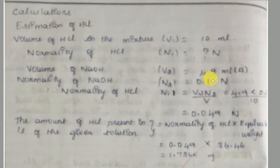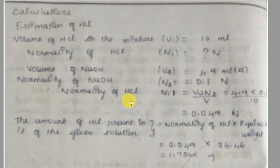The burette reading for HCl neutralization is V2 = 4.9 ml. The normality of sodium hydroxide is N2 = 0.1 N. Therefore, normality of hydrochloric acid N1 = V2 × N2 / V1 = 4.9 × 0.1 / 10 = 0.049 N.